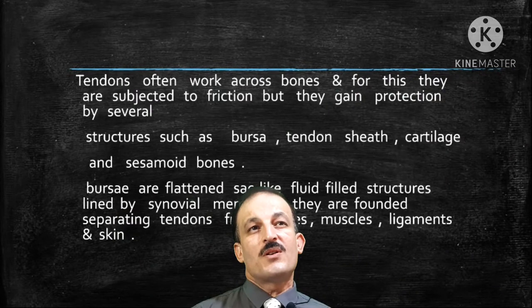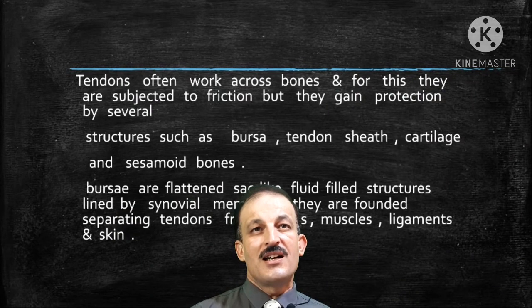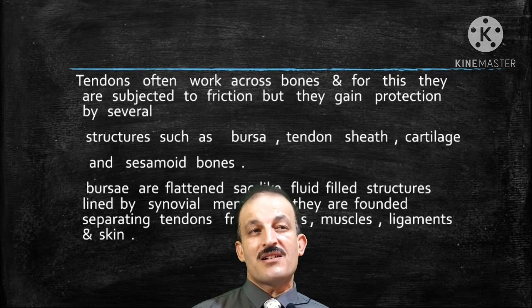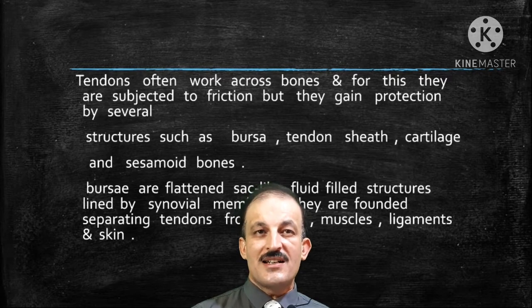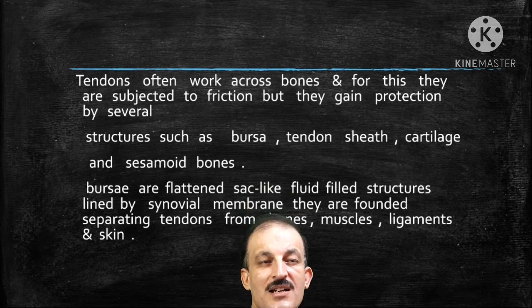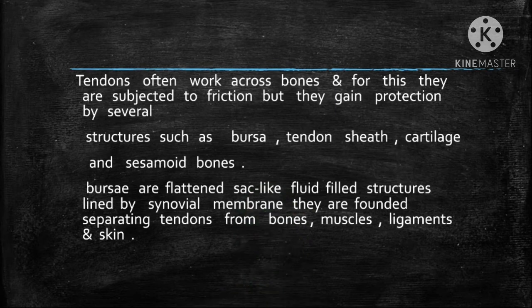Tendons often work across bones and are therefore subjected to friction, but they gain protection from several structures such as bursae, tendon sheaths, cartilage, and sesamoid bones. Bursae are flattened, sac-like, fluid-filled structures lined by synovial membrane. They are found separating tendons from bones, muscles, ligaments, and skin.